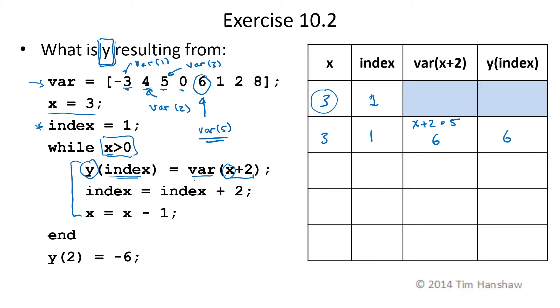So after we calculate Y, we recalculate index. Index is equal to index plus 2. So 1 plus 2 is 3 next time around. And X is X minus 1. So the old value of X, which is 3 minus 1, is just 2.